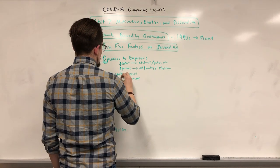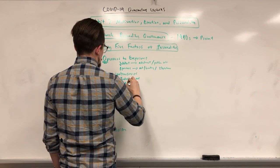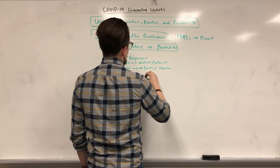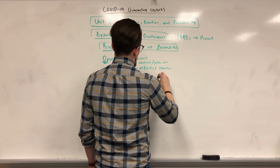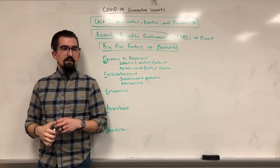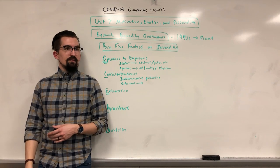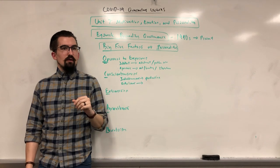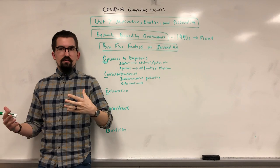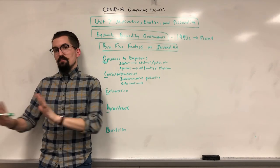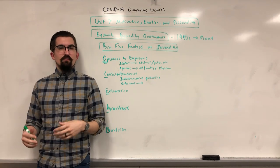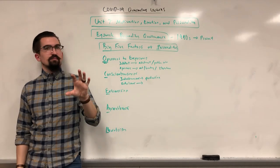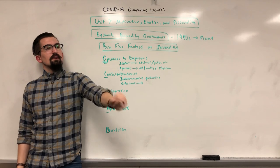Conscientiousness has subfactors including industriousness and orderliness. Industriousness means you are productive, goal-oriented, and intrinsically motivated — you'll sit down and write a book on your own, feel fulfilled by it, and feel guilty if you don't follow through. You don't need external pushing. Orderliness, by contrast, is more centered around being organized — having an agenda and structured approach to your activities.